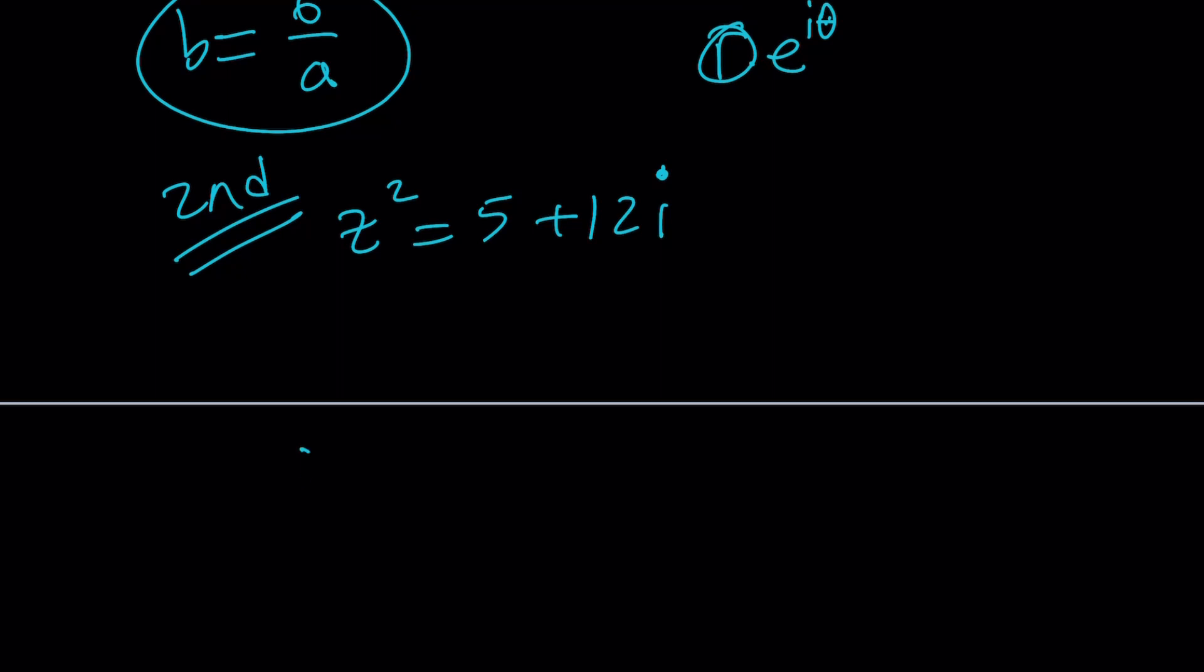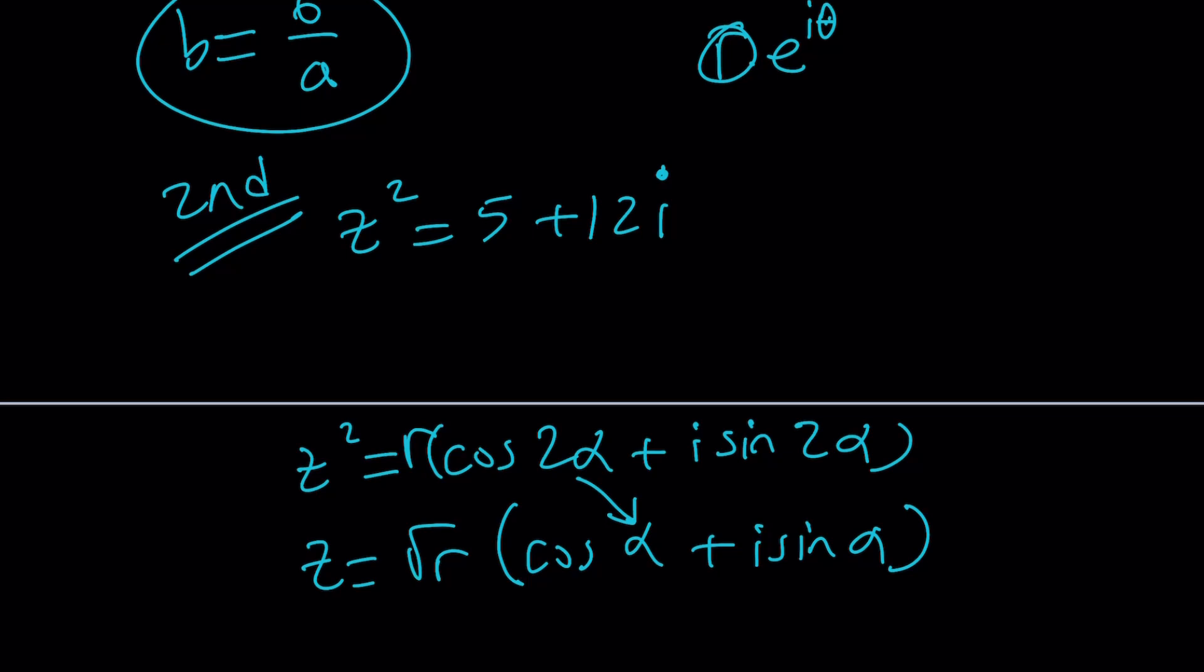So when you have, let's say you were able to write z squared as r times cosine 2 alpha plus i sine 2 alpha, then when you cut this in half, it's just going to be the square root of r and then cosine alpha plus i sine alpha. Because you're supposed to divide the angle by 2 when you're square rooting it. And then the opposite will be the other answer. That's why I'm going with the double angle here.